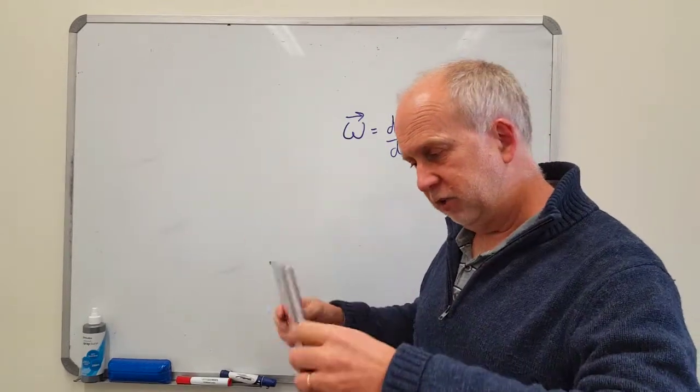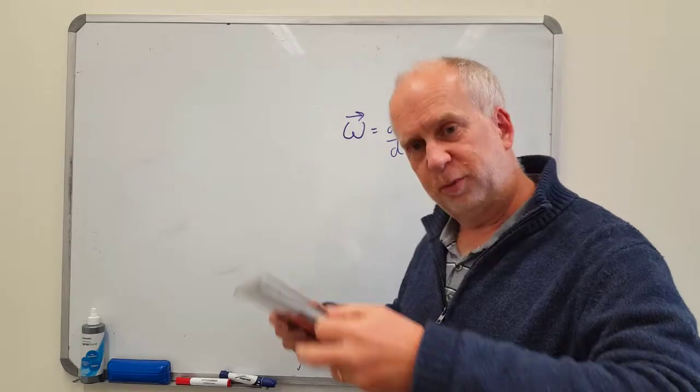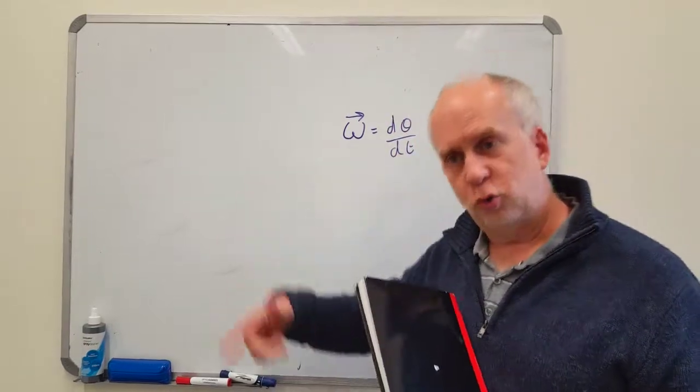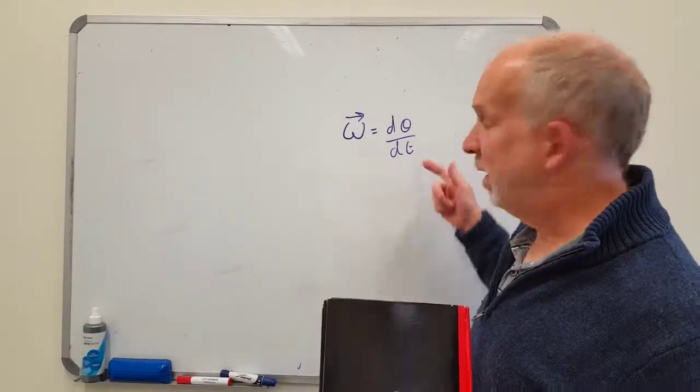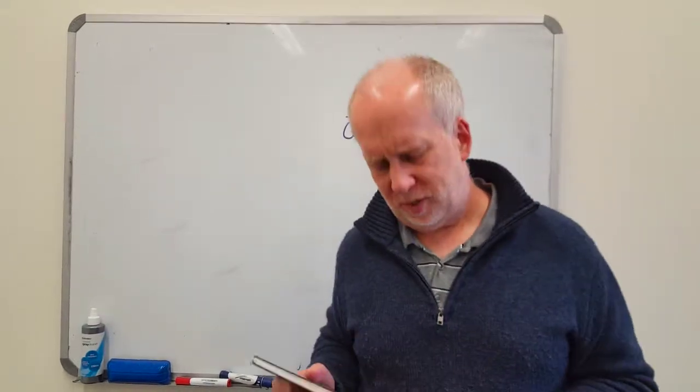Now the rate of rotation, if it's rotating once per second, that means you're going 2 pi radians a second, so d theta by dt will be about 2 pi. But what's the direction of that vector?